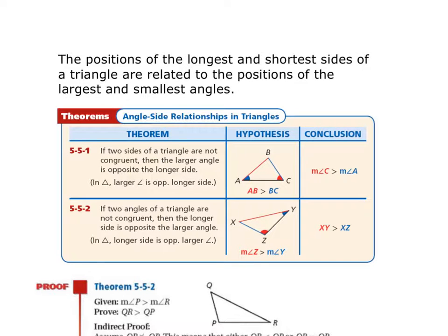For example, if AB is 10 and BC is 8, then the angle opposite the larger side — angle C — would be larger than the angle opposite the smaller side. So angle A is opposite the side of length 8, which makes angle A less than angle C.